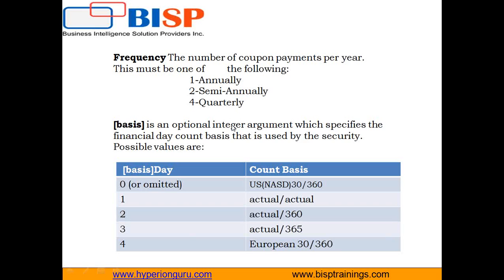Finally, basis reflects how you count the number of days in a month and in a year. The default basis value of zero assumes a 30-day month and a 360-day year. Option one uses actual days — a 365-day year with 28 days in February for a non-leap year, and 366 days with 29 days in February for a leap year.